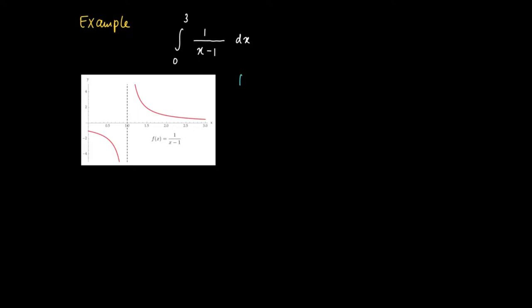So here is the function with its graph in red, and we see that there's clearly a vertical asymptote for x equals 1.